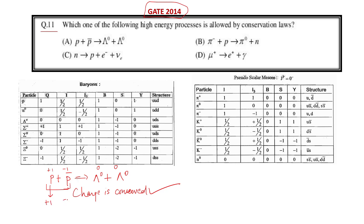Now looking at baryon number: for the proton it is plus one, for the antiproton it is minus one, giving zero on the left. On the right-hand side, baryon number is plus one plus one equals two. Baryon number is a fundamental conserved quantity and it is not conserved here, so this reaction is not allowed.